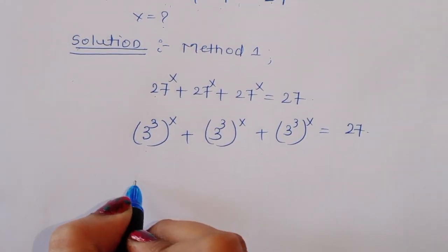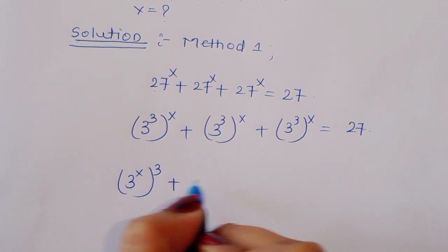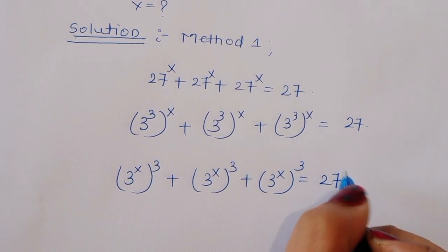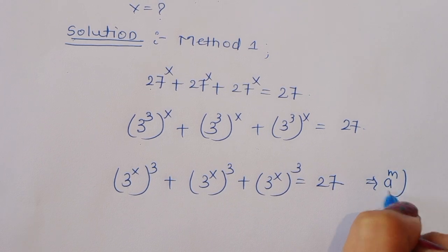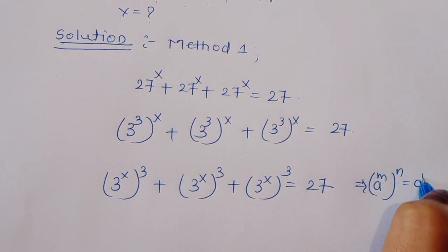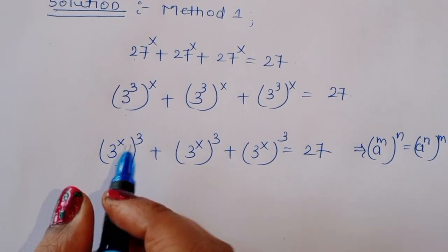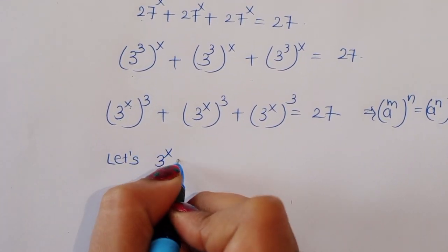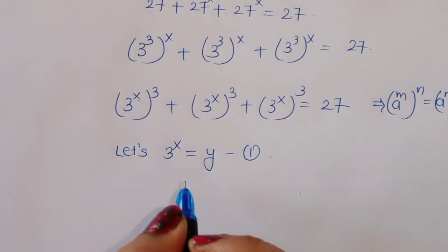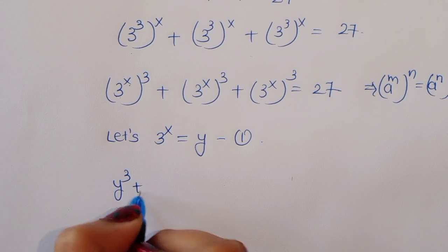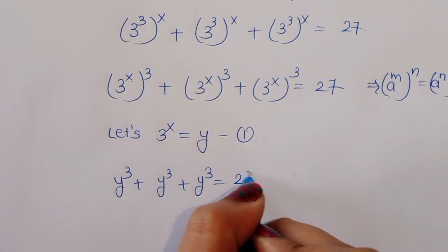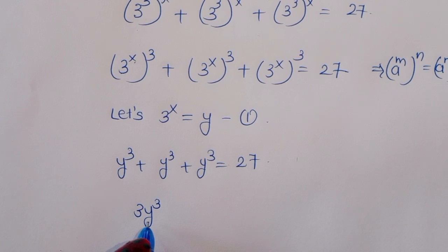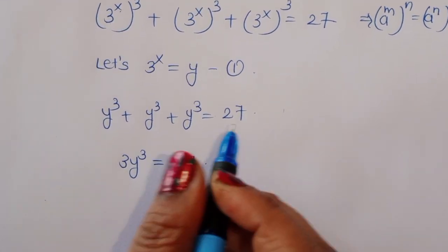Now we can write this as 3 raised to x, all to the power 3, plus 3 raised to x, all to the power 3, plus 3 raised to x, all to the power 3, equals 27. We use the formula a power m power n equals a power n power m. Let y equal 3 raised to x, so we have y cubed plus y cubed plus y cubed equals 27. This is equation 1.